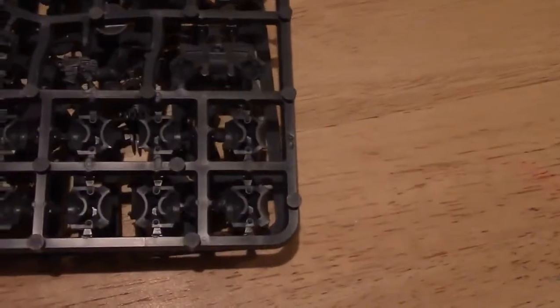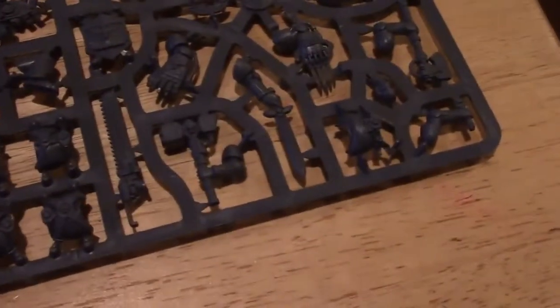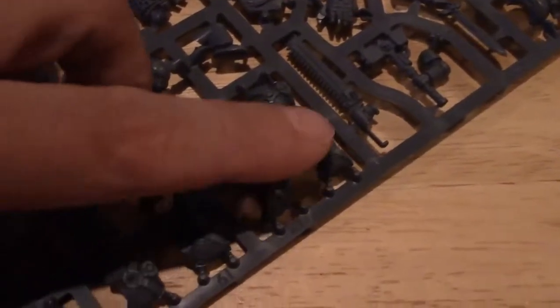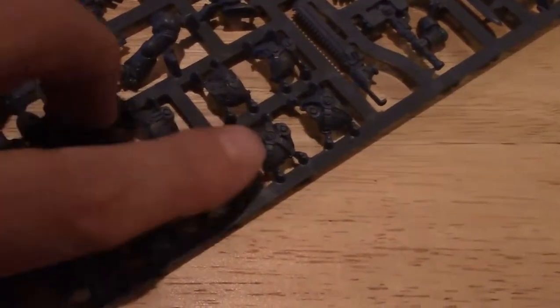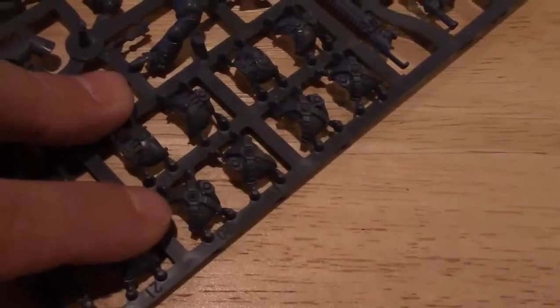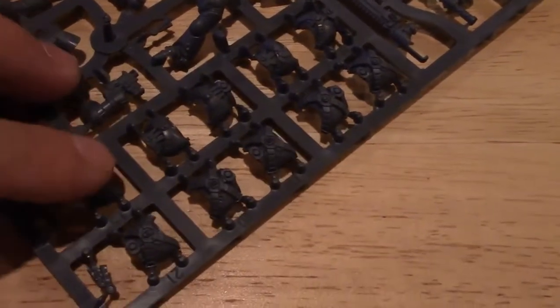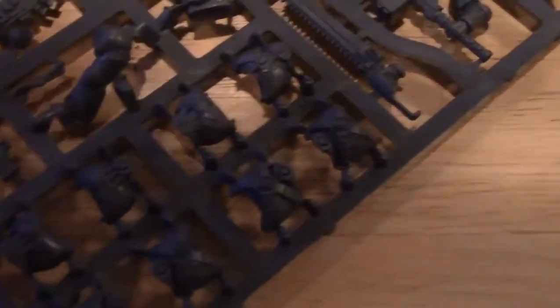Here's how to put the assault squad together with or without jump packs. There's two sprues here and five bases. This sprue has the chest pieces. Looks like we got five with the little straps for the jump packs and five without.